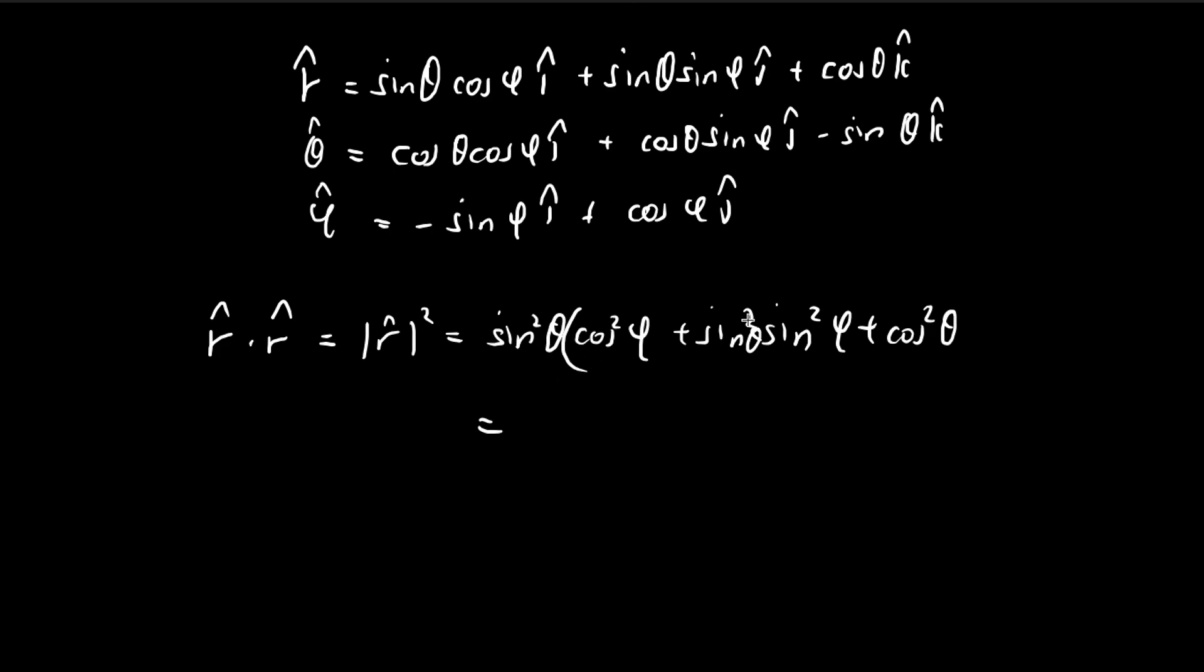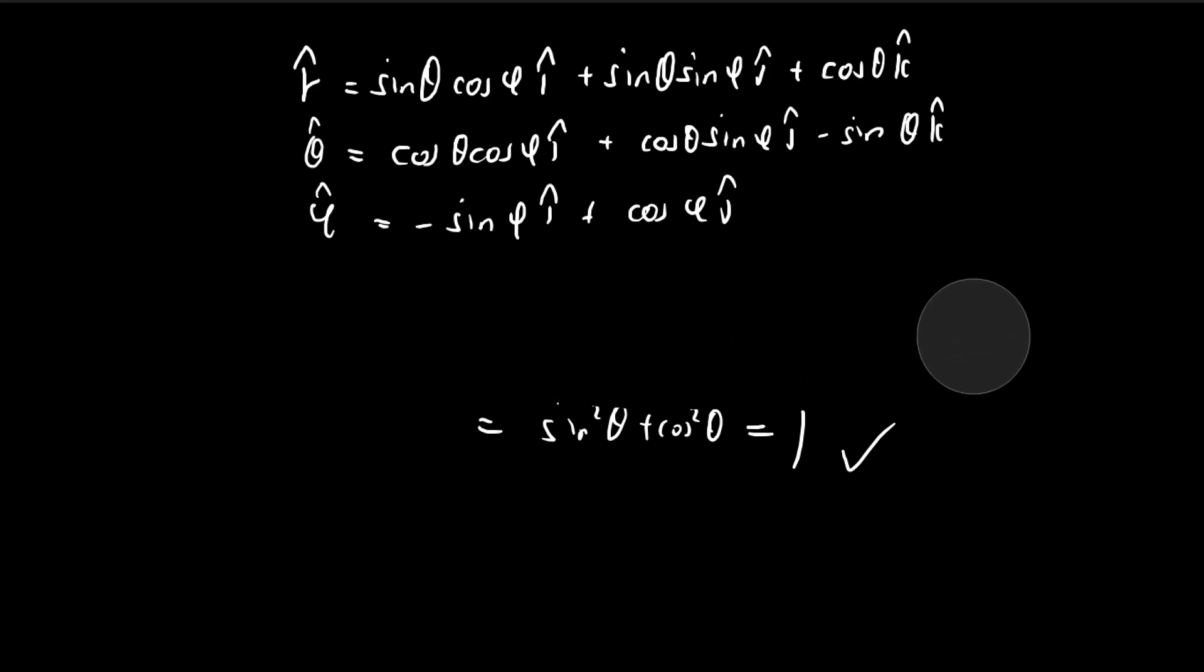So as before, you just group the sine squared thetas together, you get sine squared phi plus cosine squared phi, that's just equal to 1. So you get sine squared theta plus cosine squared theta, and that's just equal to 1. So this makes sense. The dot product of r with itself should be equal to 1.